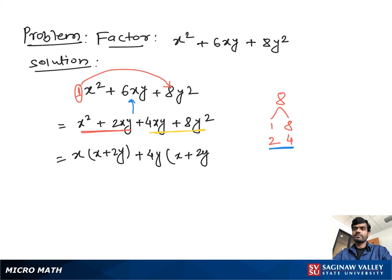Then from both terms, (x + 2y) is common, so we take it out, and we have remaining (x + 4y). This gives us the final factorization: (x + 2y)(x + 4y).